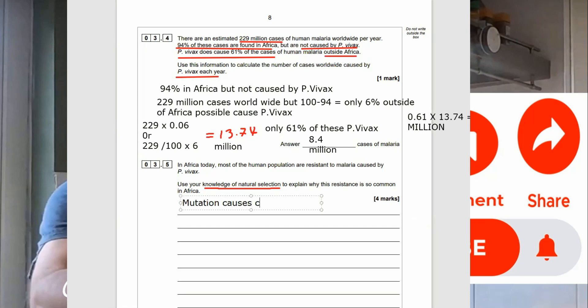So, back in GCSE, this four marker would have been a mutation causes a change in a gene, makes you more likely to survive, reproduce, pass the gene onto the offspring. There's a slight difference at A-level. We must use the word allele. So, mutation causes a change in a gene, which produces an allele, which makes people more resistant to malaria.